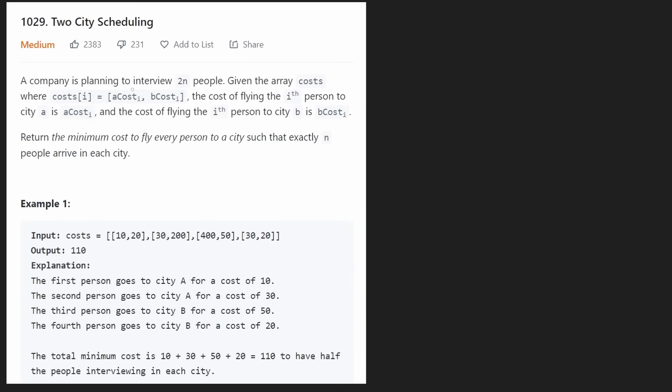A company is planning to interview 2n people and we're given an array costs. At the bottom of the description they say that the length of costs is 2n and each value in costs is actually a pair - A cost and B cost. A cost represents the cost of flying the ith person to city A. B cost similarly represents the cost to fly them to city B.